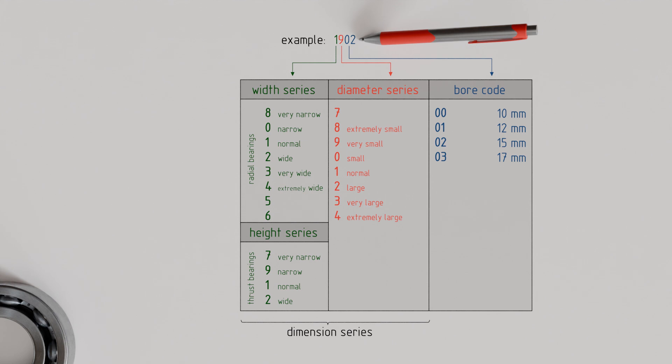which is why these diameters were assigned the codes 00, 01, 02, and 03. Deviating bore diameters between 20 and 480 mm are indicated in the designation by a code corresponding to one-fifth of the actual bore diameter.